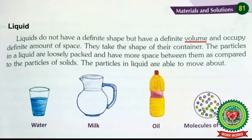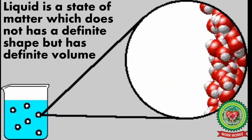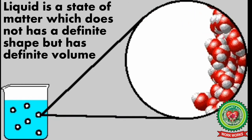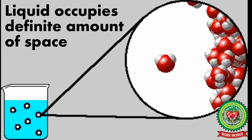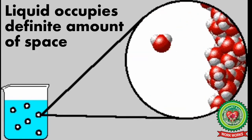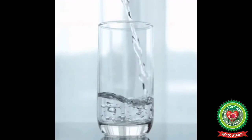The next state of matter is liquid. Liquids do not have a definite shape, but have a definite volume and occupy a definite amount of space. Underline the word 'volume' and write down its definition: volume is the amount of space occupied by matter. Liquids take the shape of their container.